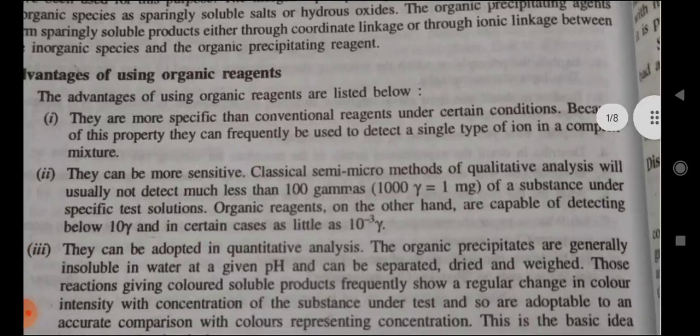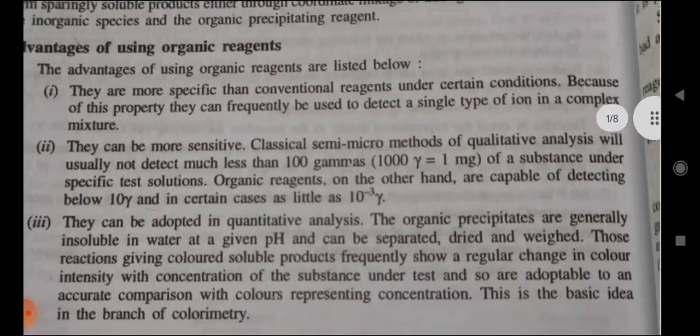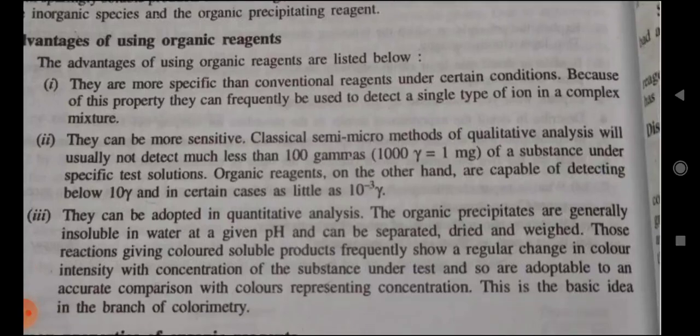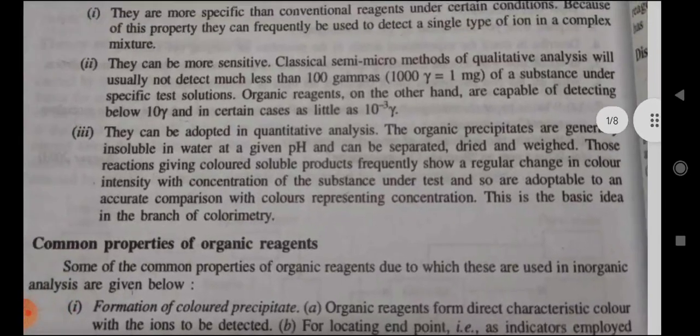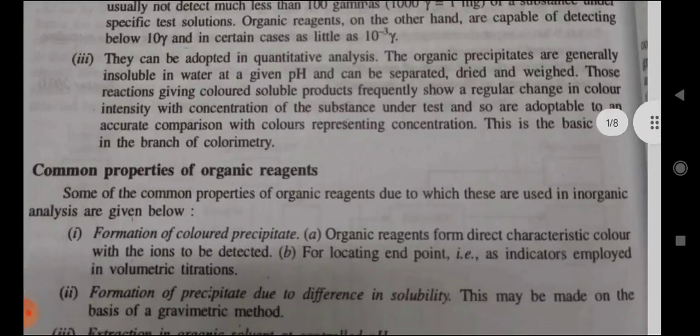Third, they can be adopted in quantitative analysis. Organic precipitates are generally insoluble in water at a given pH and can be separated, dried, and weighed. Those reactions giving colored soluble products frequently show regular change in color intensity with the concentration of the substance under test, and so are adaptable to accurate comparison with color representing concentration. This is the basic idea of the branch of colorimetry.